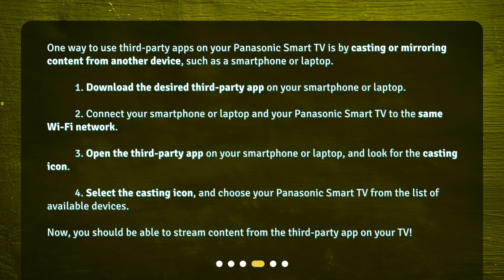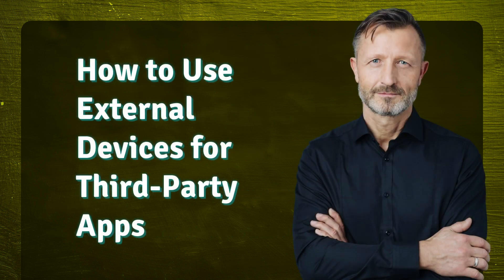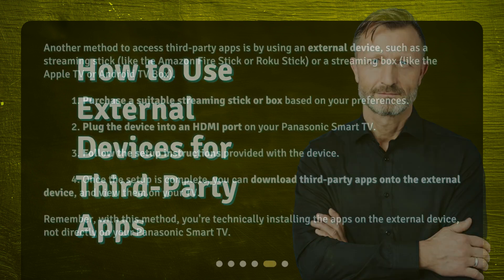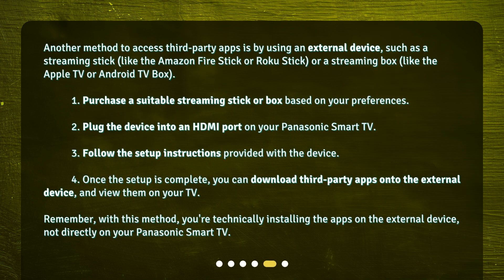Choose your Panasonic Smart TV from the list of available devices. Now, you should be able to stream content from the third-party app on your TV. Another method to access third-party apps is by using an external device, such as a streaming stick — like the Amazon Fire Stick or Roku Stick — or a streaming box, like the Apple TV or Android TV box.